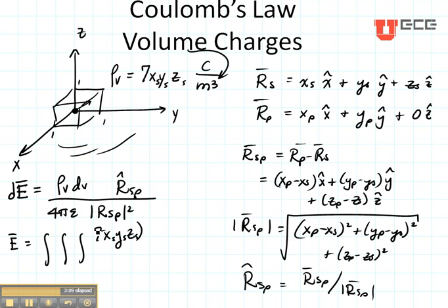And then what is our DV? If I took a little unit of volume right there, that would be DXS, DYS, and DZS. Divide that by 4 Pi Epsilon, magnitude squared, and then this unit vector, RSP.